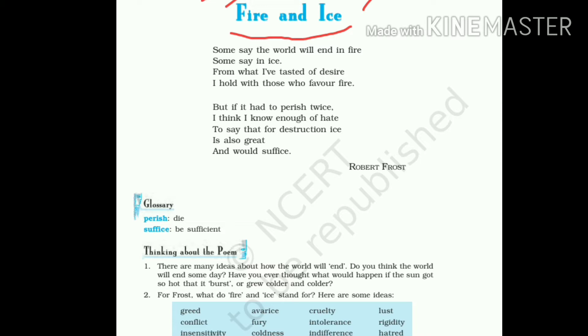There are many ideas about how the world will end, but according to the poet, the two major elements are fire and ice, which would be responsible for the destruction of this universe. The poem has an underlying message that nothing seems to be permanent in this world. And this is the theme of this poem.